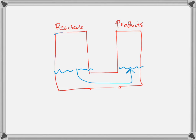We are now at equilibrium. There's water going both towards the products and towards the reactants in both cases. Let's move to Le Chatelier — let's add more reactants. What happens? We add more reactants in here — we fill this up a little bit more. Some water drops down, this water level goes up until we reach a new equilibrium.